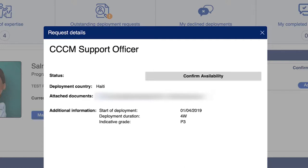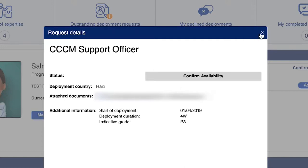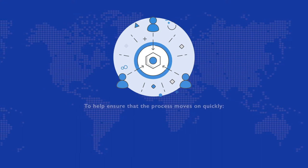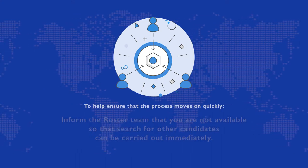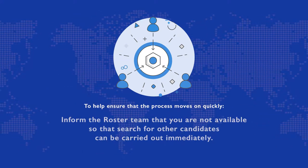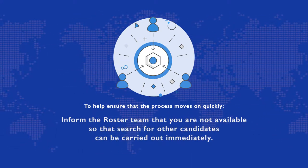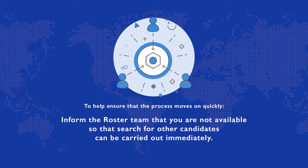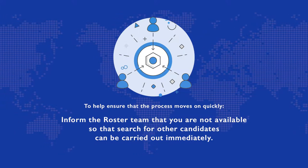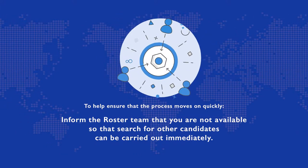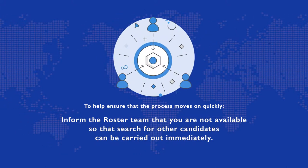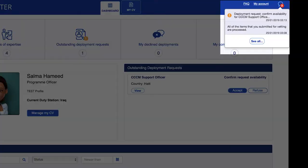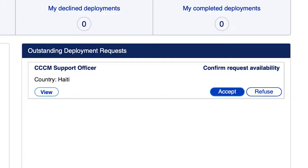If you are not interested or are unavailable, click Refuse. Informing the DOE roster that you are not available will help ensure that the process moves on quickly. Once the roster team is aware that you are not available, a second search for other candidates can be carried out immediately. If you are interested in a deployment, click Accept.